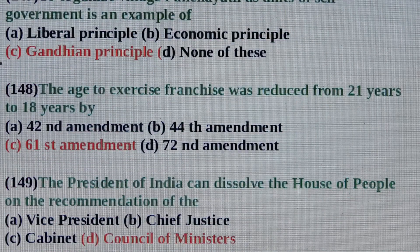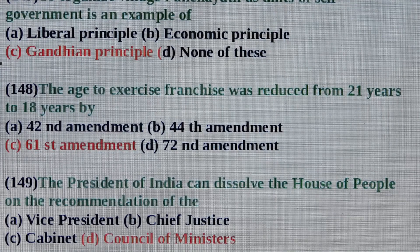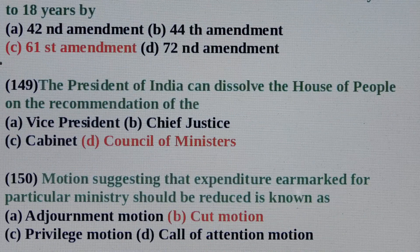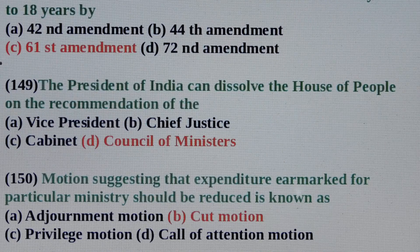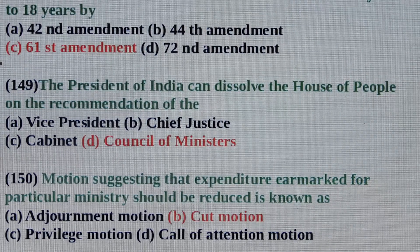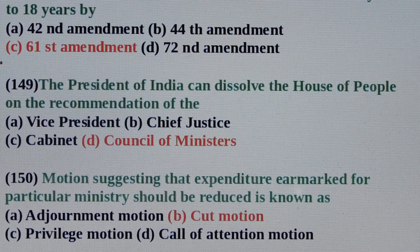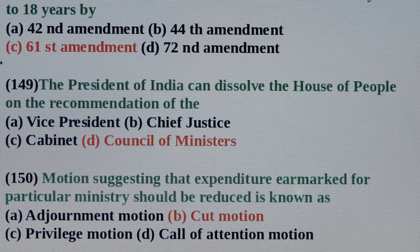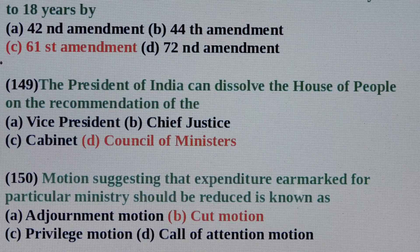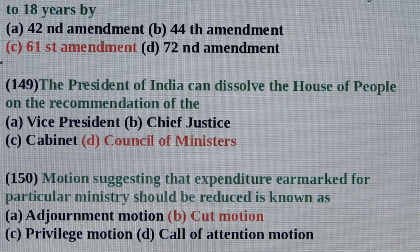Question No. 148: The age of exercise of franchise was reduced from 21 years to 18 years by? Answer is Option C: 61st Amendment. Question No. 149: The President of India can dissolve the House of People on the recommendation of the? Answer is Option D: Council of Ministers. Question No. 150: Motion suggesting that expenditure earmarked for a particular ministry should be reduced is known as? Answer is Option B: Cut Motion. So friends, these are Multiple Choice Questions of Constitution with answers. Thank you.